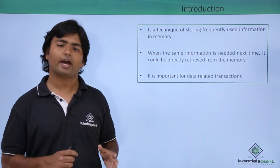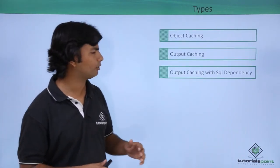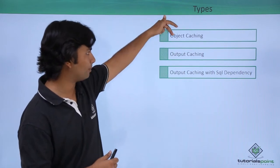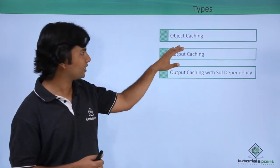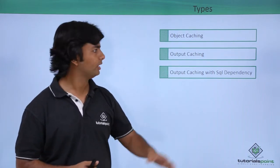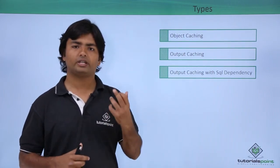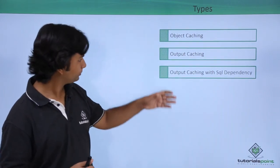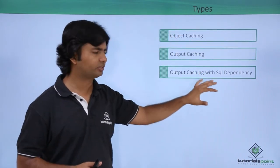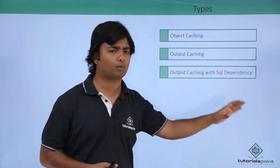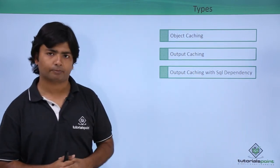In ASP.NET, we have several types of caching, but here we are going to cover a couple of types: first, object caching, and then output caching. In object caching, we will store a single value of an object type. In output caching, we will mark a particular page with the output cache directive. We will also see SQL dependency — meaning some SQL server involvement will be there during the implementation.